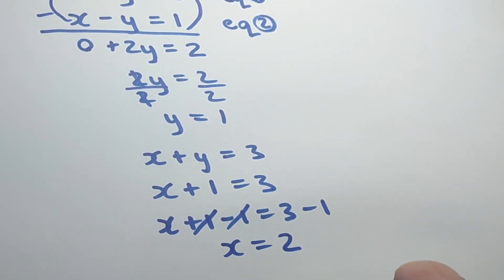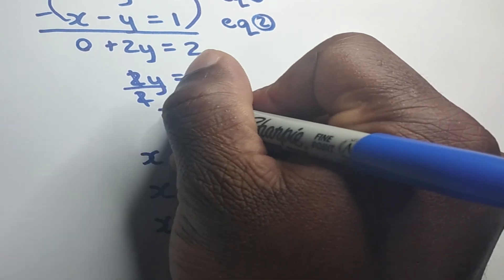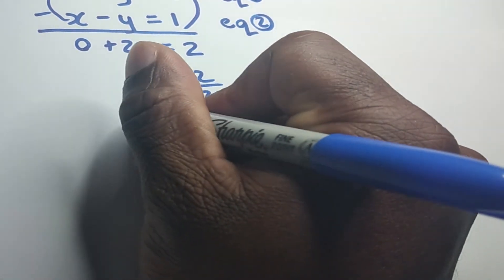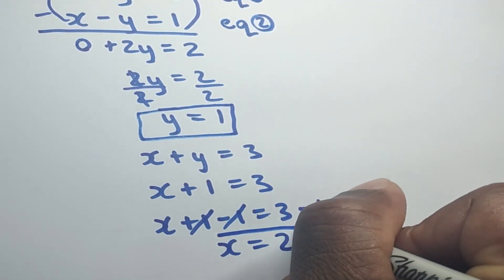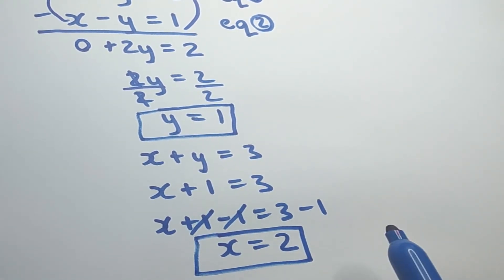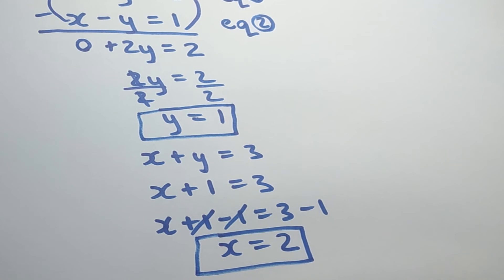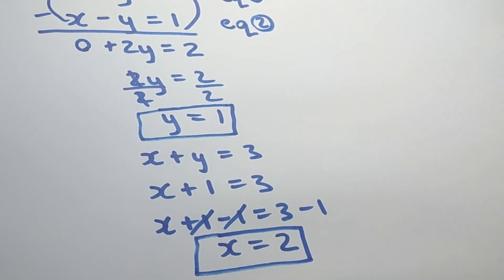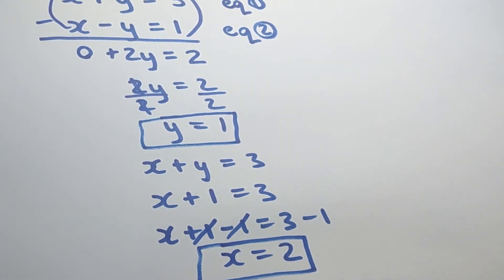So therefore, we would have obtained our y value to be equal to 1 and our x value to be equal to 2. And that's pretty much how you solve simultaneous equations using the elimination method.